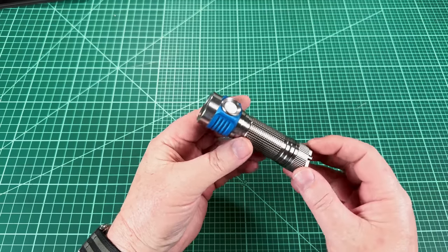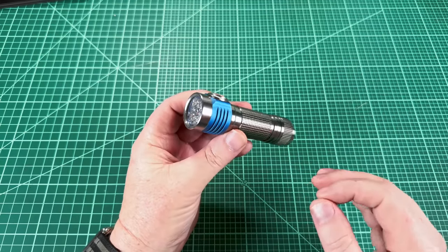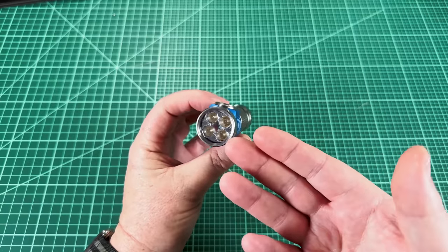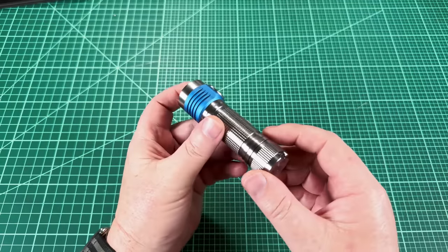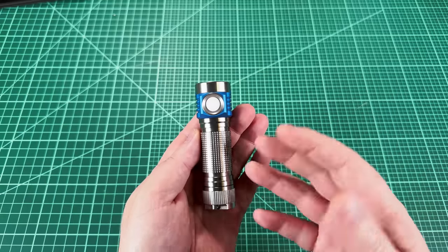When you get into the world of enthusiast flashlights, it's not long before you come across Hank Wang's D4V2. It's kind of the gold standard for an enthusiast custom-built flashlight.